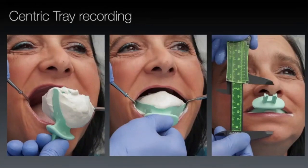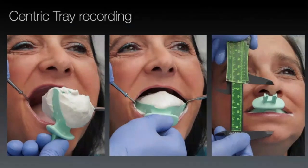We do a centric tray recording — essentially a preliminary jaw relationship. It doesn't record the bite, but it records the jaw relationship and gives us an accurate starting point for mounting custom trays. You can even use this for bite blocks. They're autoclavable and cost maybe £30. It gives you a very good OVD starting point, which we'll fine-tune later with the gothic arch.